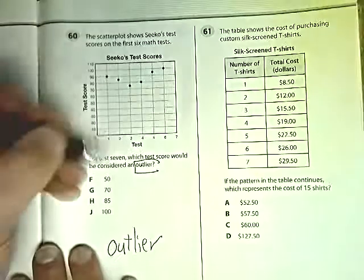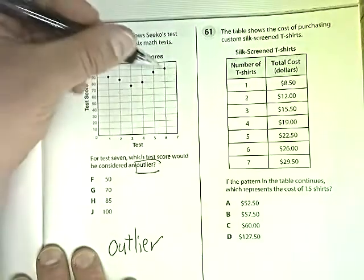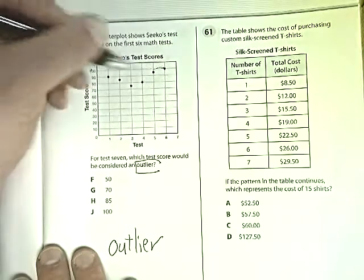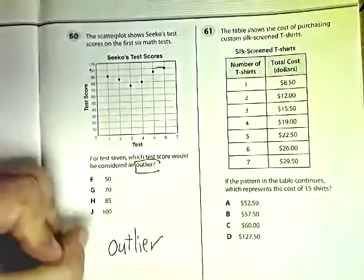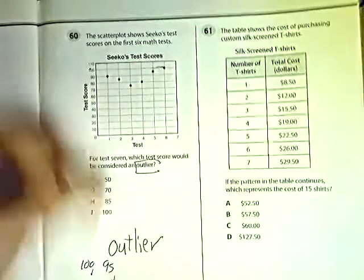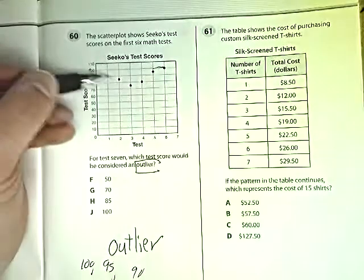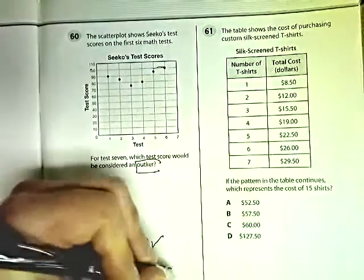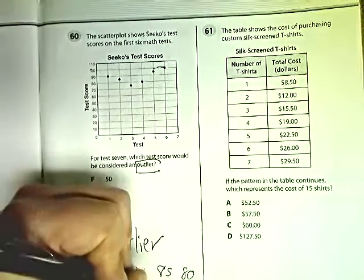So in order to figure out which one would be an outlier, you find what the numbers are. He has one 100, he's got 95, he's got a 90, he made an 85, he made an 80, and he made a 75.